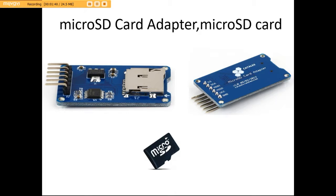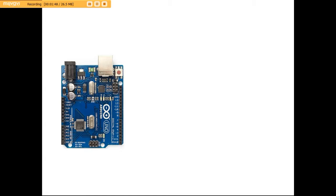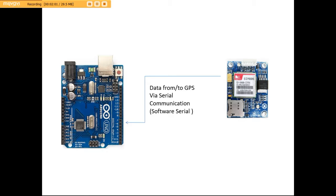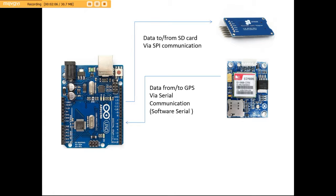In the SD card, we have stored the border data points in a file in .csv format. We will get the current location of the fisherman from the GPS module and send it back to the Arduino. The communication will be serial communication. The Arduino will then process the data with the data stored in the SD card. The Arduino and SD card communication will be via SPI communication, and the Arduino will determine the status of the fisherman — if he is in danger or not.